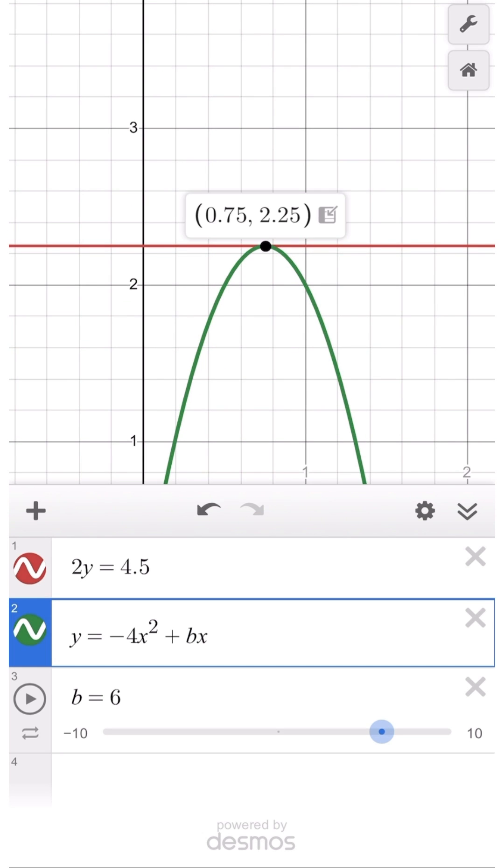Zooming in, we confirm that it's one intersection only, so b is indeed 6, confirming our earlier solution.